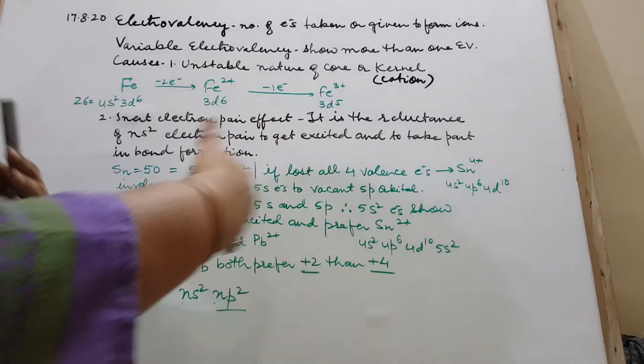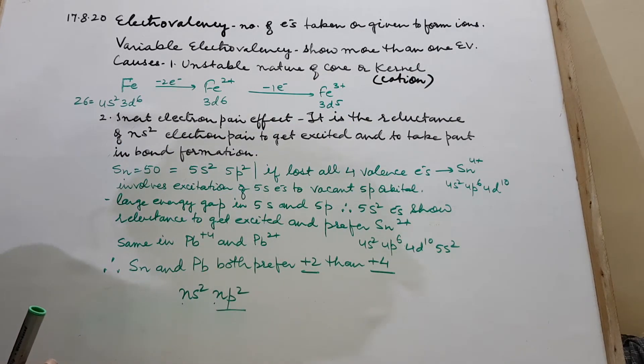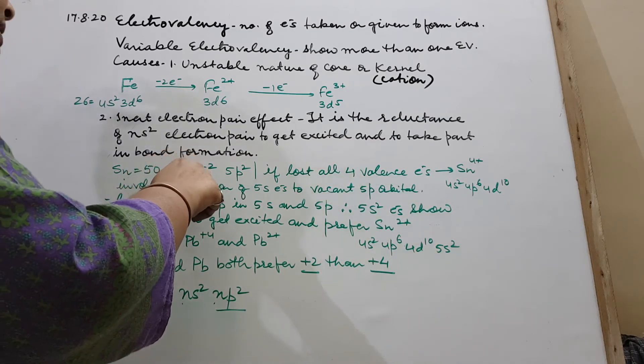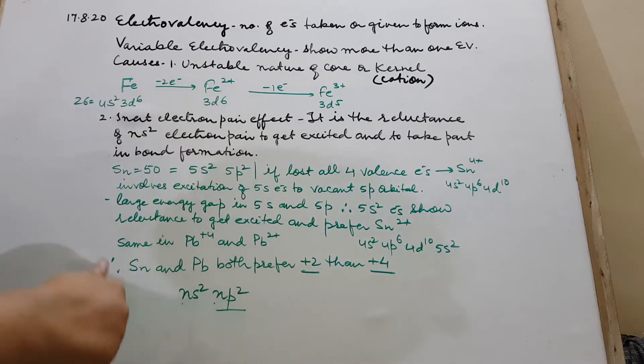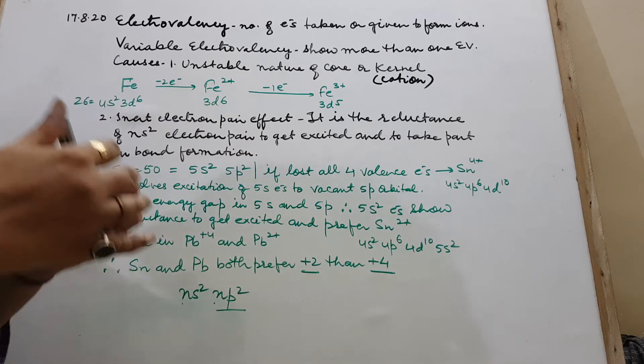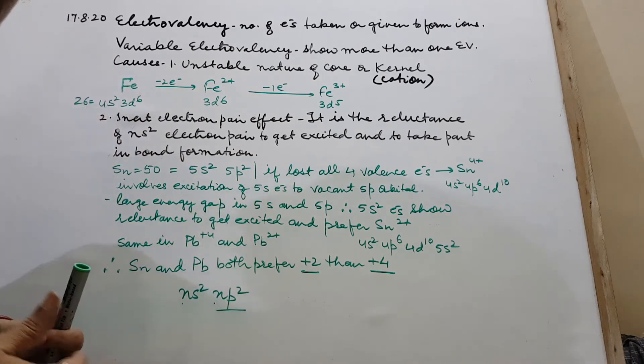And they remain reluctant. That's why these elements, especially of group 14, especially lower elements. The big gap, the large gap between the energies of 5s and 5p. The electrons of s, ns2, whether it is 4s2 or 5s2 or 6s2, they remain reluctant.